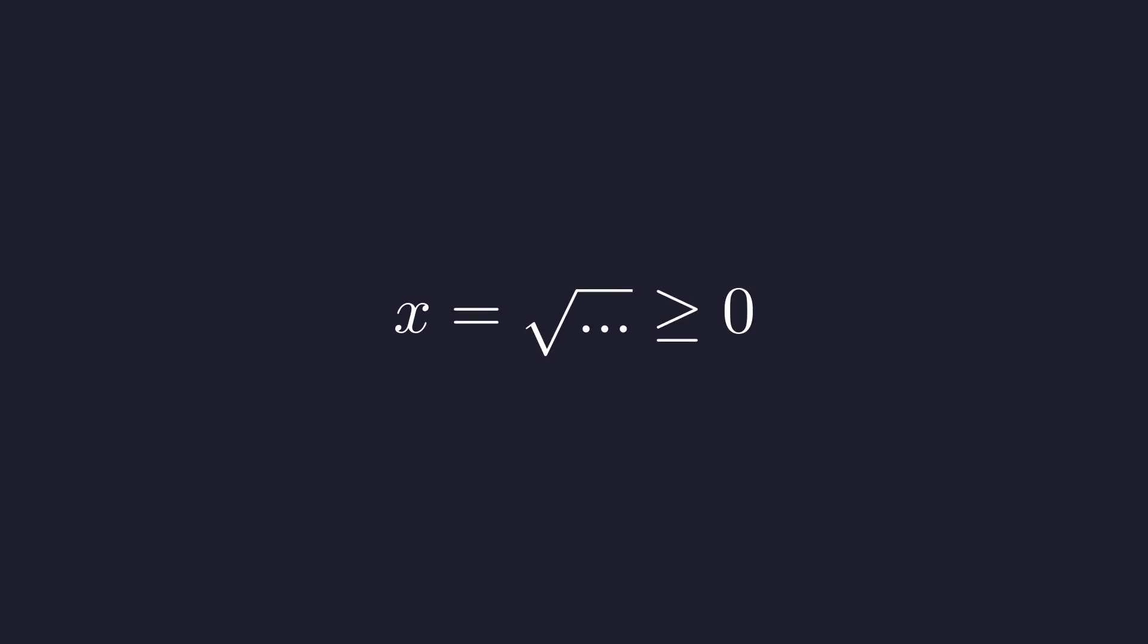Since x is the result of a principal square root, it must be non-negative. This implies that 2 minus the square root of 2 plus x must be greater than or equal to zero. Rearranging this, we find that 2 must be greater than or equal to the square root of 2 plus x.